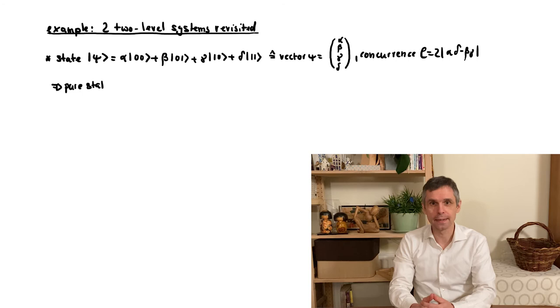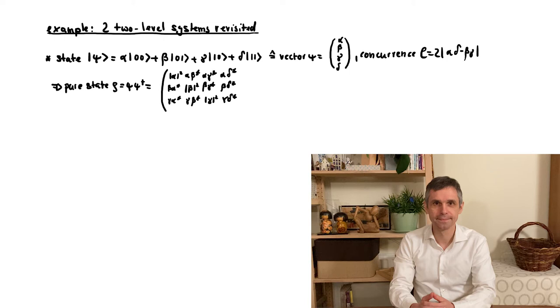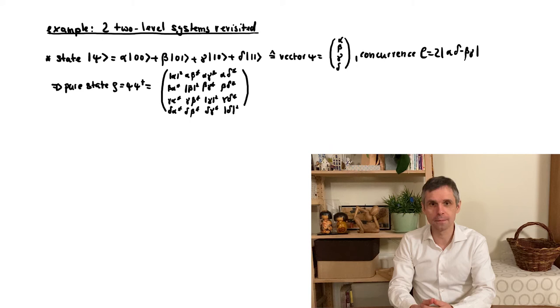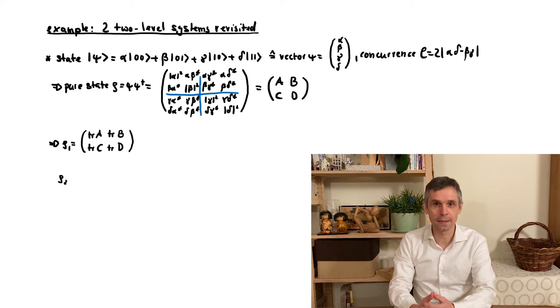Now in such a pure state ψ, the corresponding density matrix of the composite system would be ψψ†, which for concreteness I here write out completely. To work out the consequences for the different parts, we then break this down into four blocks of size 2×2, which I denote as A, B, C and D. Then the reduced density matrix of the first two-level system is obtained by taking the traces of these 2×2 matrices. And similarly, the reduced density matrix of the second two-level system is given by the sum of the two matrices A and D on the diagonal.